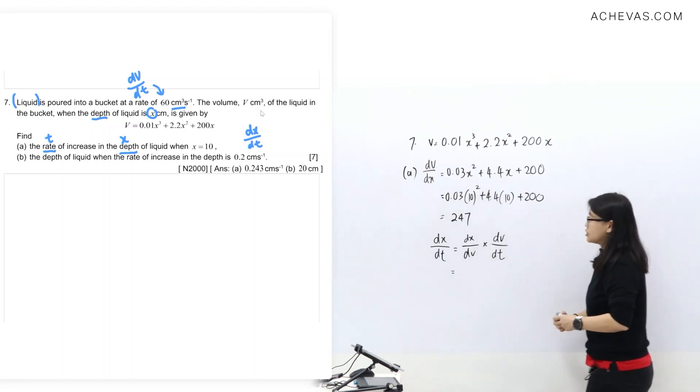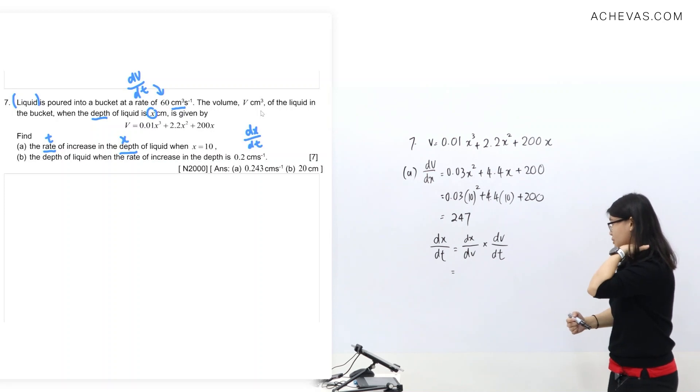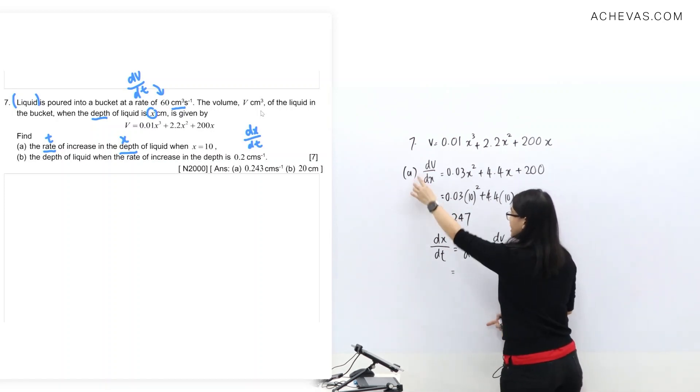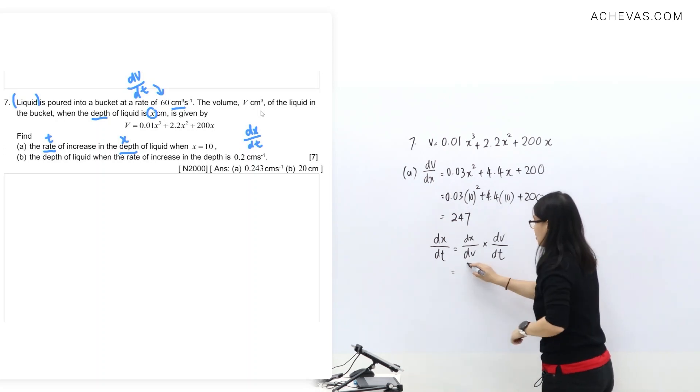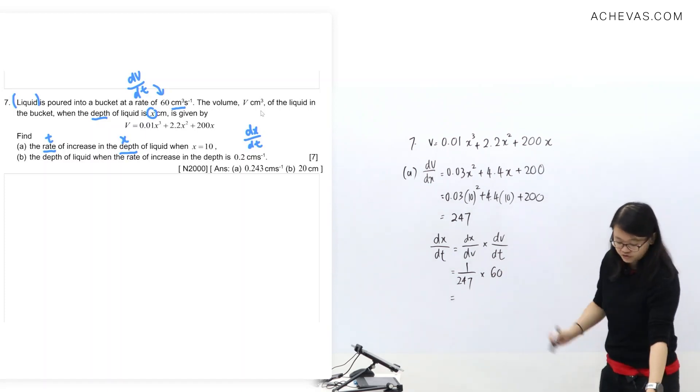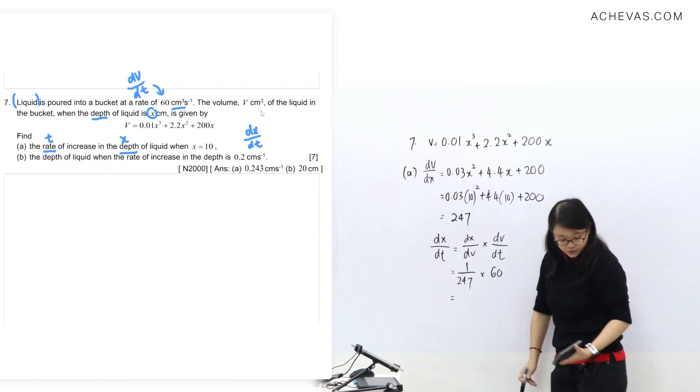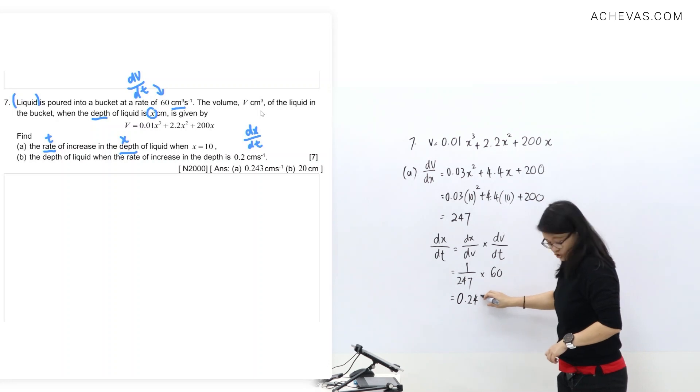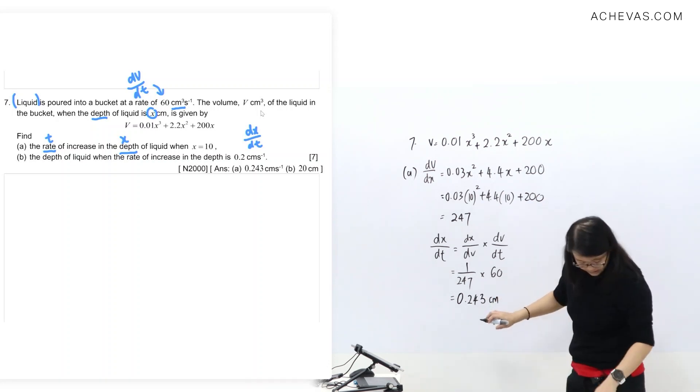Once again, we want to be careful. Read again: dx/dV, this is dV/dx, so this one I'm going to put 1 over 247, and the rate of volume just now was 60. Later I'll tell you why you will know if you forgot to put the reciprocal. Let me just write my answer here first. This one should be 0.243 cm per second.